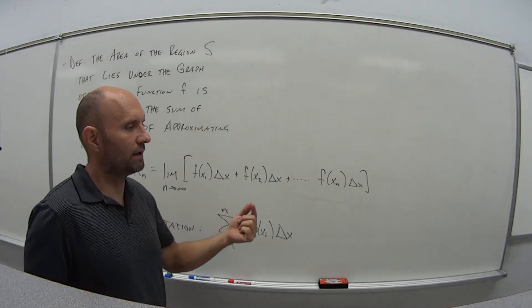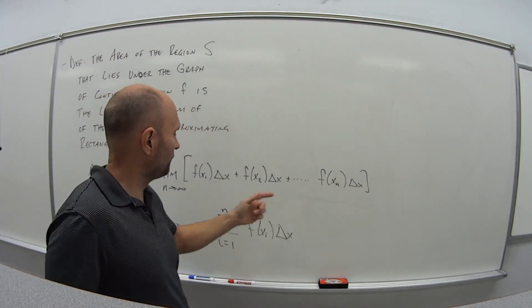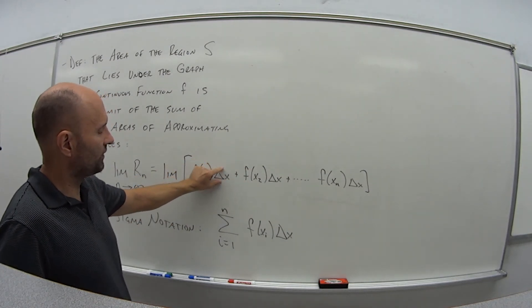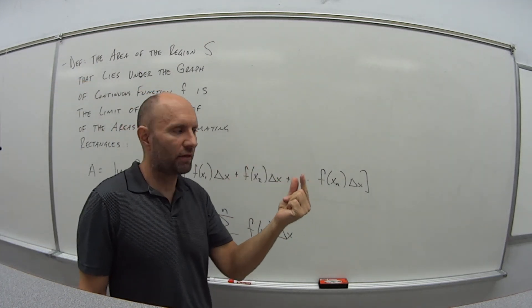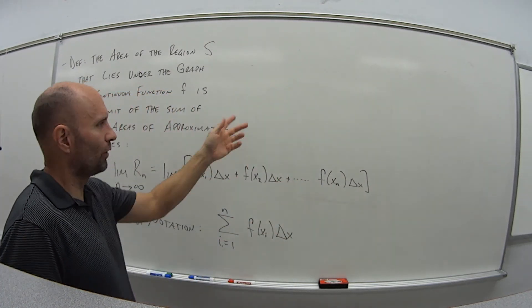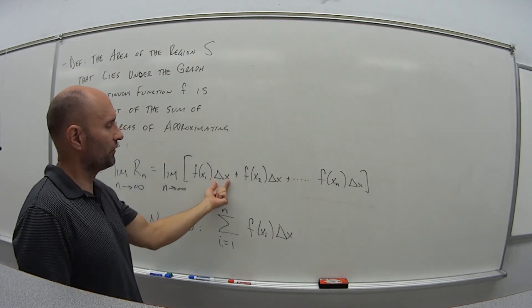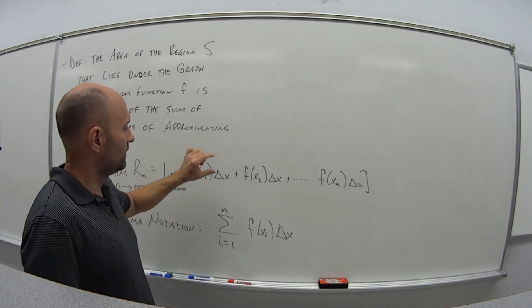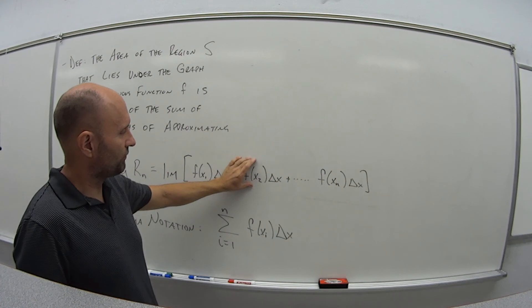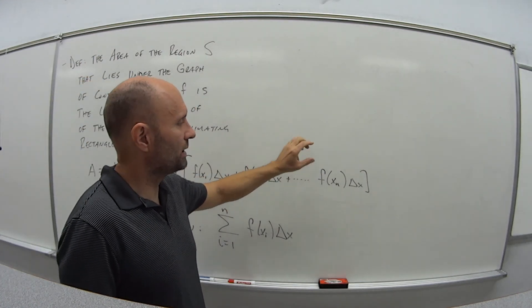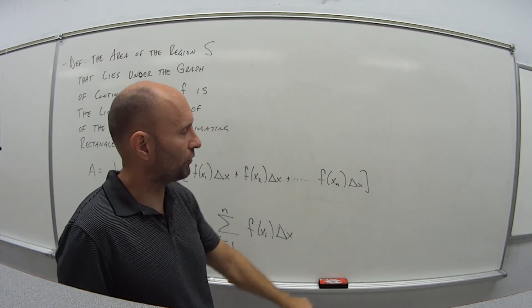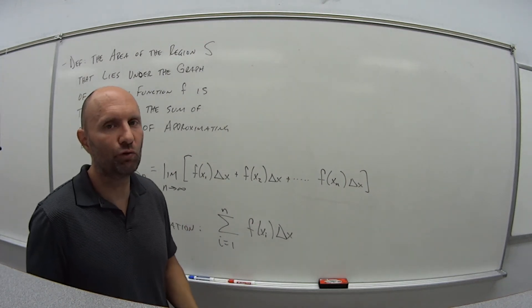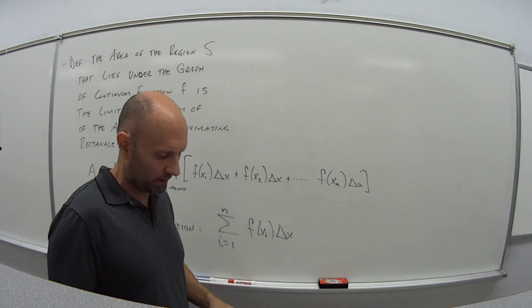So essentially what this is saying is we're going to divide this thing up into N intervals, take the function at each point, whatever that function value is, times it by delta X, which is the width of that rectangle. So in the example I raised there with the parabola, this delta X would have been one quarter. So we would have taken F of one quarter times a quarter, then F of one half times a quarter, F of three quarters times a quarter, F of one times a quarter. And you would just repeat that, and again the more ends, the more rectangles you can get, the better your approximation of that area is going to be.